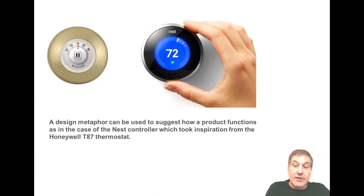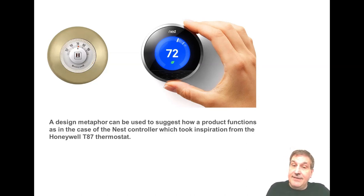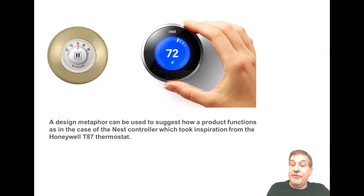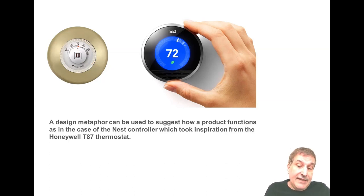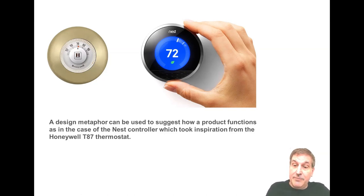Another use of metaphor in product design: if a product will work in a certain domain with certain functions, we may borrow aesthetics, functionality, and details from other products — particularly those deemed successful and well known. We carry over the expectations of how it works, making the new product easier to become familiar with, easier to learn, and helping avoid errors. In this example, the Nest thermostat was clearly borrowing aesthetics, logic, and functionality from the very famous Honeywell T87 thermostat, found in homes across the world and familiar to many people.